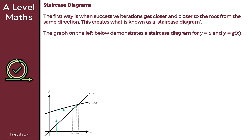The graph demonstrates a staircase diagram for y equals x — the straight line — and y equals g of x. We're also given x₀ as a starting value. By using iteration with x₀ as our starting value, we obtain x₁, x₂, x₃, and so on. As you can see, with each iteration we're getting closer and closer to the root — so we say we're converging to the root.